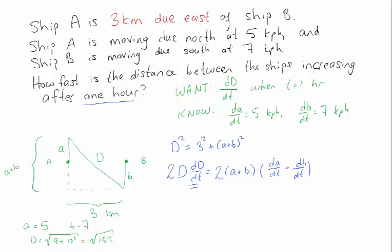So now I can fill in these quantities. I get 2 times the square root of 153 times the thing I want is 2(A plus B) times (dA plus dB). Note A and dA didn't have to be the same, but because we've been moving for only one hour, they were. And now we can just solve for dD/dt.